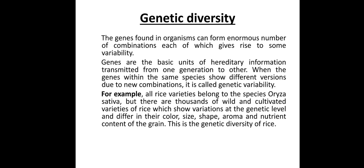Let's explain with the best example. For example, rice varieties — we have a number of rice varieties. These all belong to one species, that is Oryza sativa. But they differ in their color, shape, sizes, aroma, and nutrient content. The reason they show different colors and different sizes is called genetic diversity.